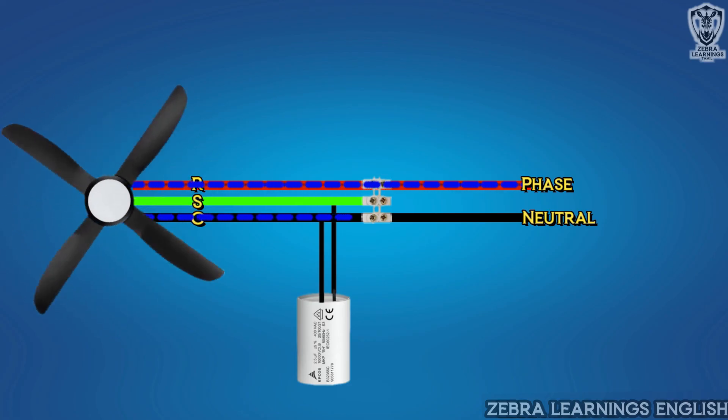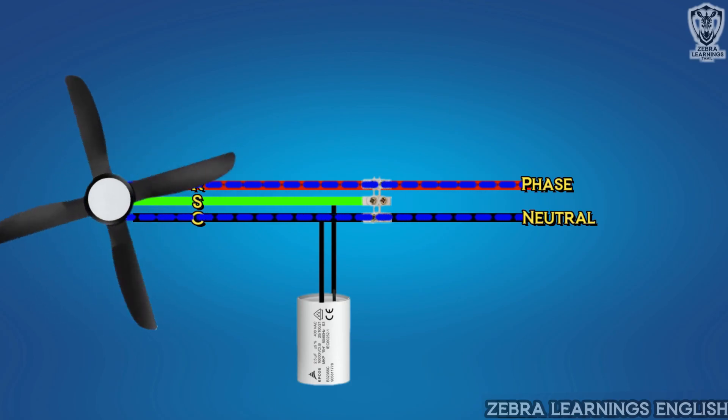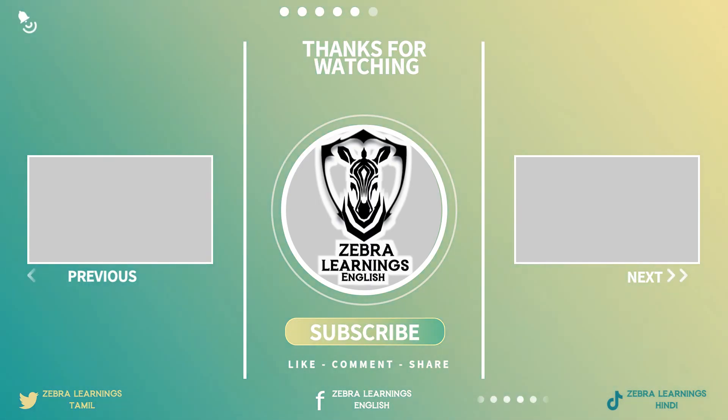This is the capacitor wiring diagram for ceiling fan. If you have any doubts, please ask in the comments section. Please subscribe to our Zebra Learnings English channel. Thank you.